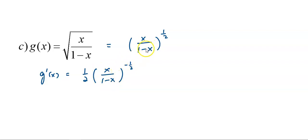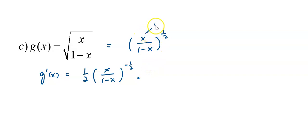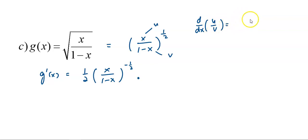After differentiating the outer function, you differentiate the inside function x/(1-x) with respect to x. We can see that x/(1-x) is a quotient form, so we need to apply the quotient rule. We take x as my u function and (1-x) as my v. According to the quotient rule formula for differentiating u over v: copy down v first, then differentiate u, minus copy down u times differentiate v, all over v squared.